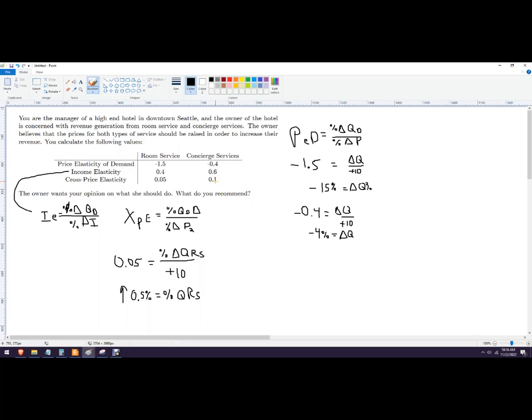So the ultimate recommendation - we don't know the income change - I would say just increase concierge service prices, and that'll have a bonus effect of also increasing room service demand.